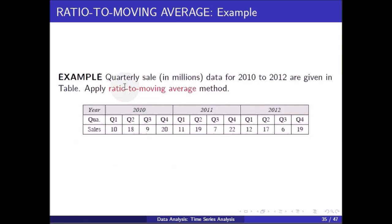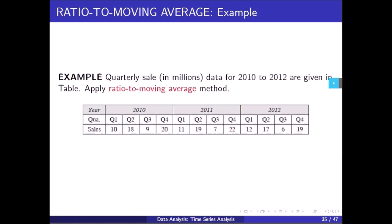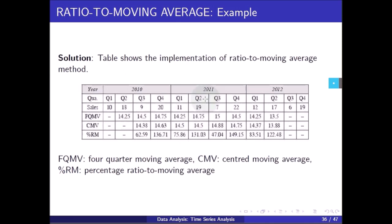For example, quarterly sales data for 2010 to 2012 are given in the table — apply the ratio to moving average method. Three years are there: 2010 to 2012, with quarters Q1, Q2, Q3, Q4 and sales of 10, 18, 9, 20 respectively for the first year. These are the calculations to get the ratio to moving average.